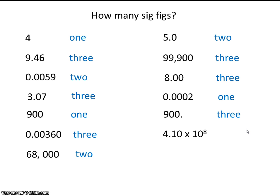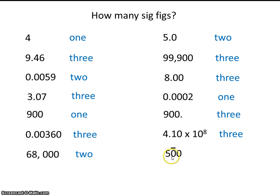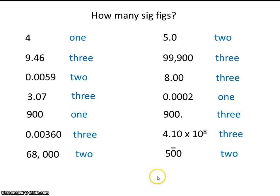And you know that all numbers written in scientific notation are significant, so all 3 of these numbers are significant. Now here's something we haven't seen. This number has a dash or a line over it — you won't see this very often. What this means is that this zero is significant. The other trailing zero is not significant because there's no decimal place. So this number 500 is precise to the tens place, and this number has 2 sig figs.